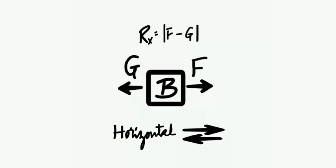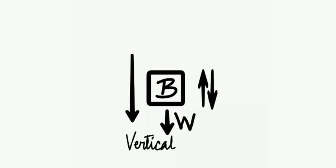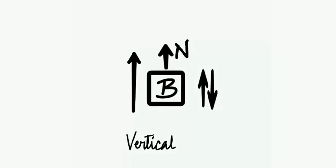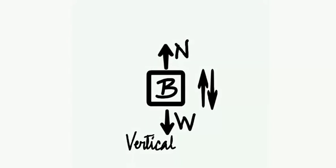Similarly, if we take the vertical forces that act on this body, we have W and N. These forces again act in directions opposite to each other, so the net resultant force along the vertical, Ry, will be the difference of W and N. Had they been acting in the same direction, we would add the forces together.